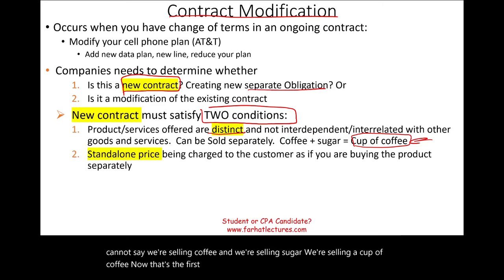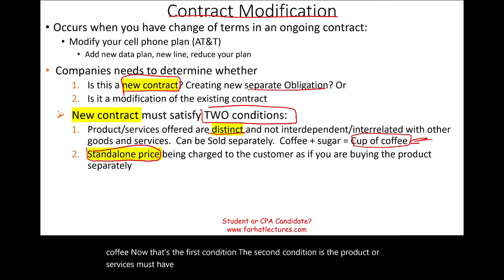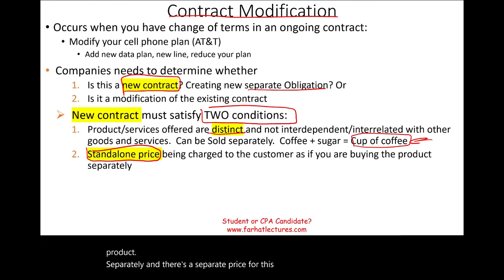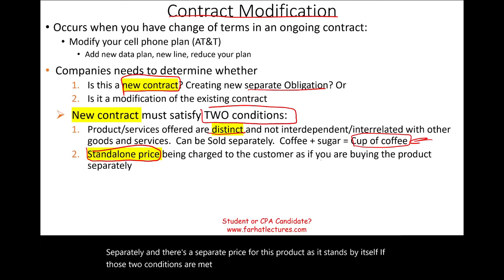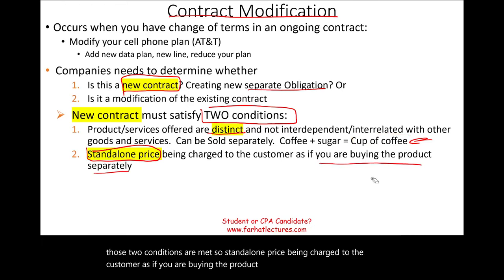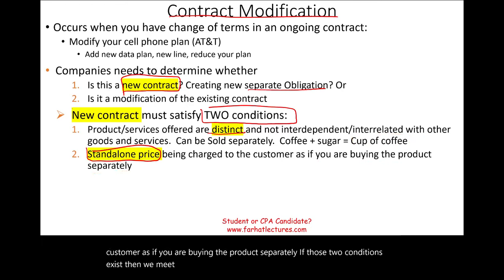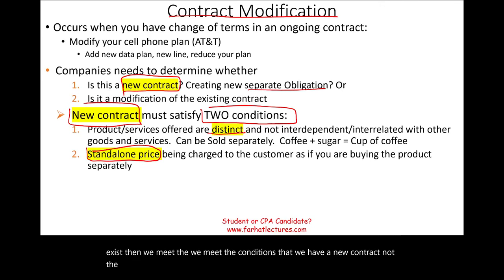The second condition is that the product or service must have a standalone price — meaning we can charge for this product separately, and there is a separate price for it as it stands by itself. If both conditions are met, then we have a new contract, not a modification of the existing one.